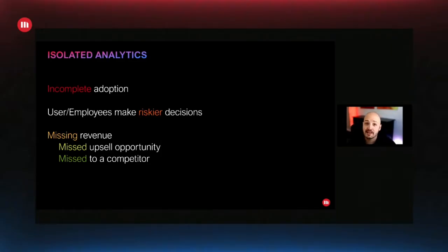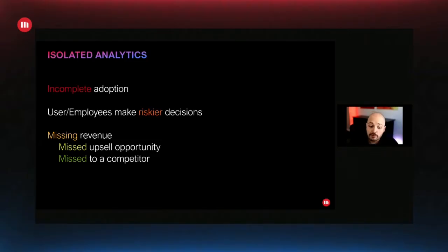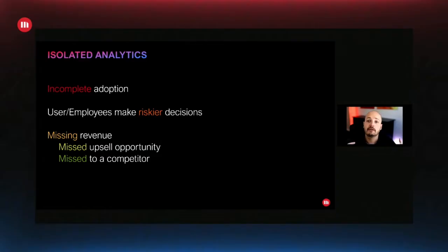We haven't reached complete adoption. It would be great to have total adoption — that would mean everyone would make decisions with the highest probability of being the right one when they have data to back it up. And one important element, specifically if you are building software, is that it's a potentially missed revenue opportunity — either because you're missing upsell opportunities, or because customers went to a competitor who puts just a little more information in front of users when they need to make decisions.